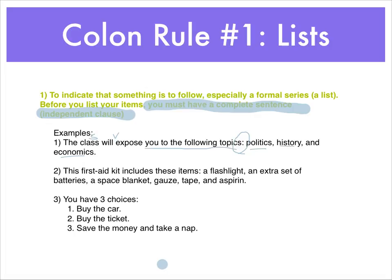Sometimes you can list items vertically like you would in an outline. So here it says 'You have three choices:' — that's still a complete sentence. Number one, buy the car. Number two, buy the ticket. Number three, save the money and take a nap. So we'd use the colon in that case as well.